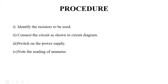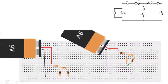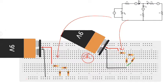The procedure is as follows. Firstly, we need to identify certain resistors from the bunch of resistors using color coding, as we did in the previous experiment. Secondly, we connect the given resistances in a proper fashion as decided by the circuit diagram. Thirdly, we switch on the power supply from the project board. Lastly, we note down the readings of the ammeter.